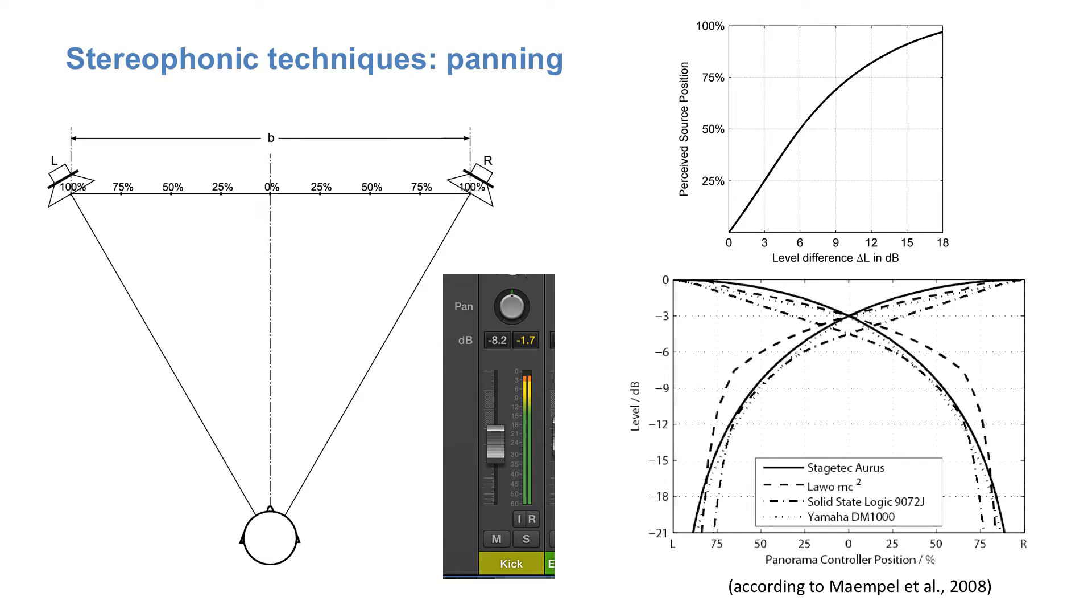You can either send a mono signal to both loudspeakers with a level difference introduced electronically. This is called panning and is part of every hardware or software based mixing console. The implementation of these panning curves can differ a little with respect to the middle position of the control knob. Sometimes it attenuates the signal by 3 dB, aiming at a constant loudness compared to the left and right position, and assuming incoherent signals from the two loudspeakers, so that two loudspeakers with minus three dB would sum up to zero dB and produce the same loudness.